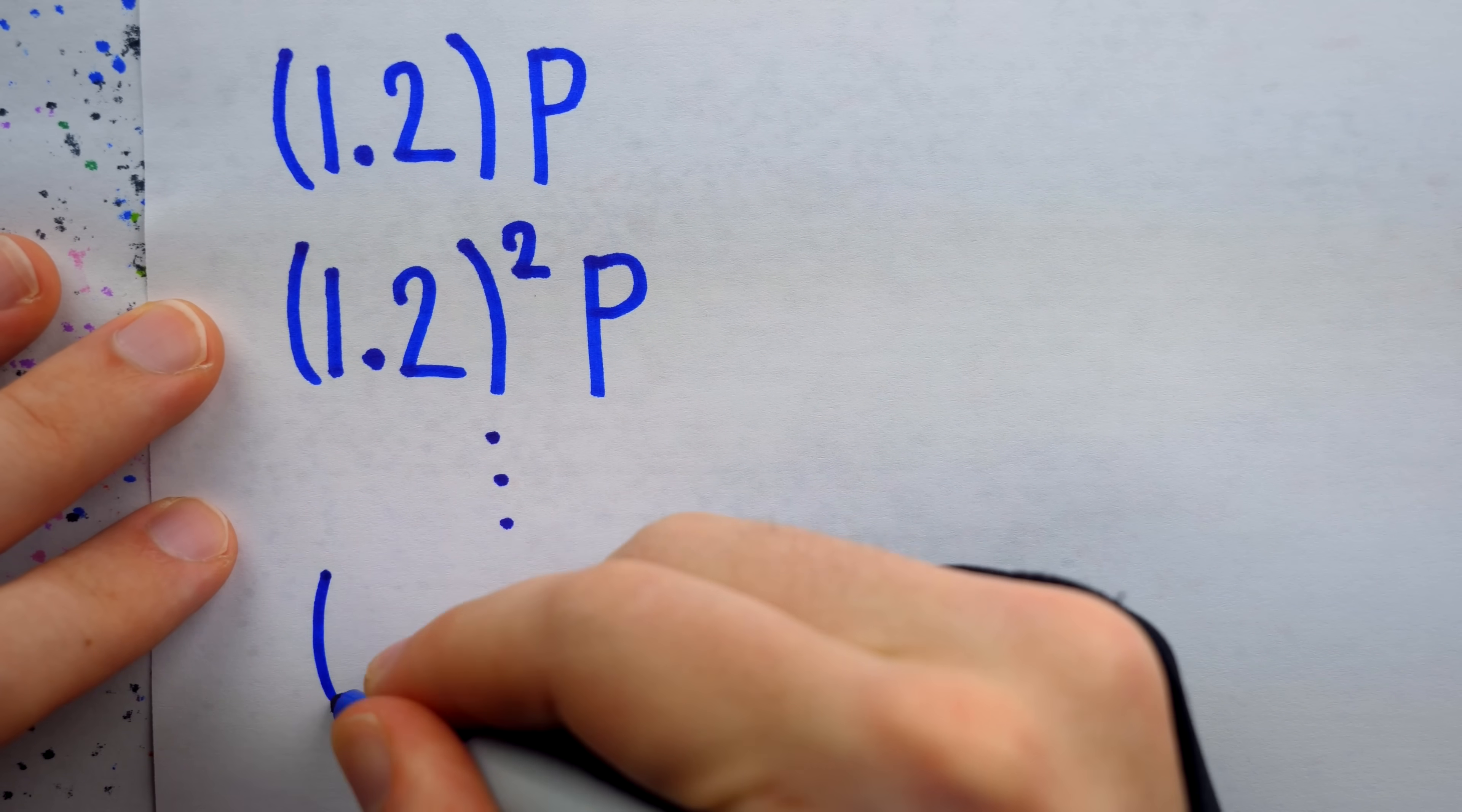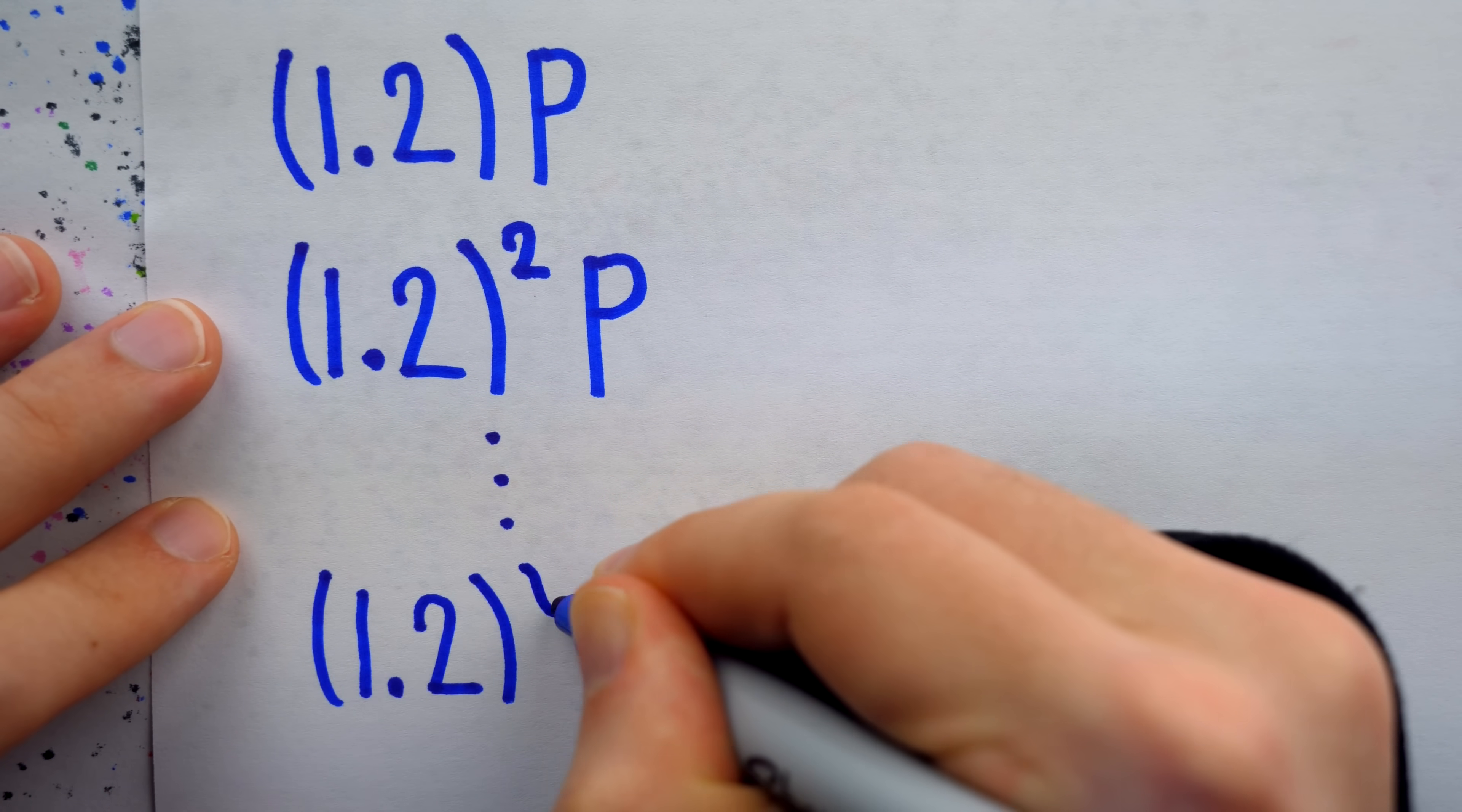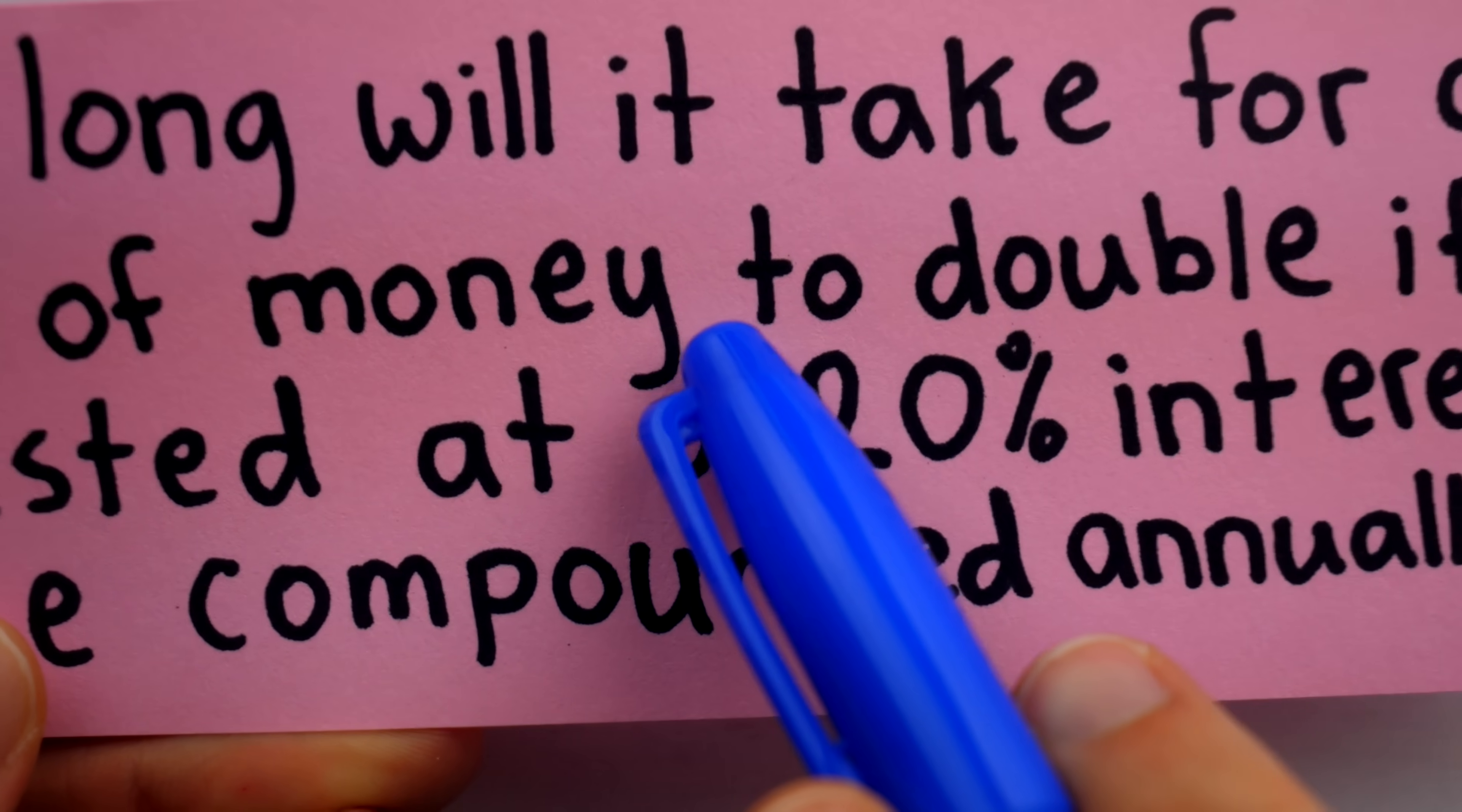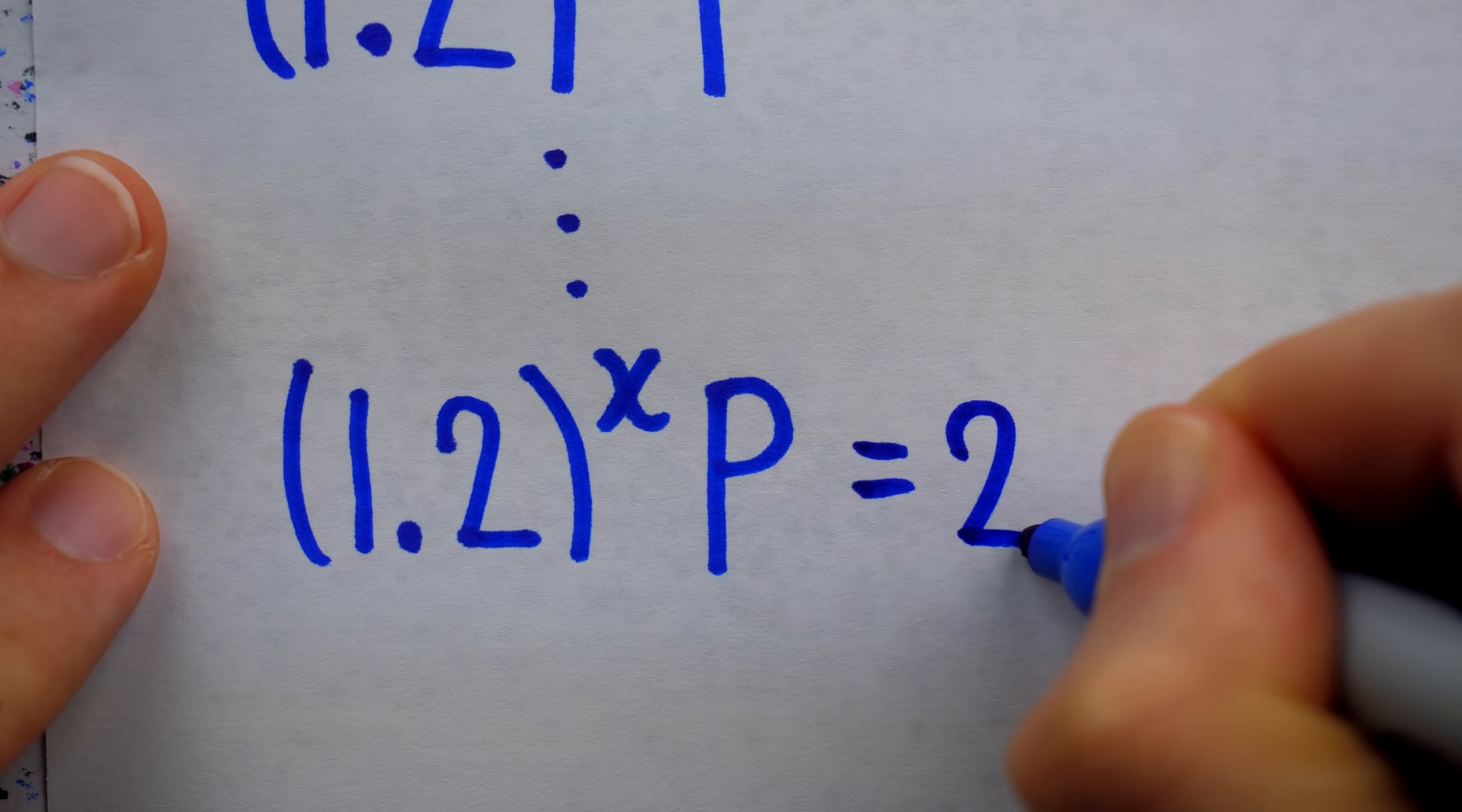And in general, after x years have passed, a sum of money p earning 20% interest compounded annually, will be worth 1.2 to the power of x times p. And according to the problem on the tablet, we need x so that the sum of money has doubled. Hence, we need this to equal 2 times p.